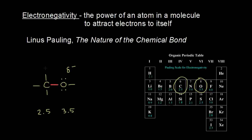Another way to show the movement of those electrons in red closer to the oxygen would be this arrow here. The arrow points in the direction of the movement of the electrons in red. So carbon is losing some of those electrons in red — carbon is losing a little bit of electron density, a little bit of negative charge. Carbon used to be neutral, but since it's losing a little bit of negative charge, this carbon will end up being partially positive. So the carbon is partially positive and the oxygen is partially negative.